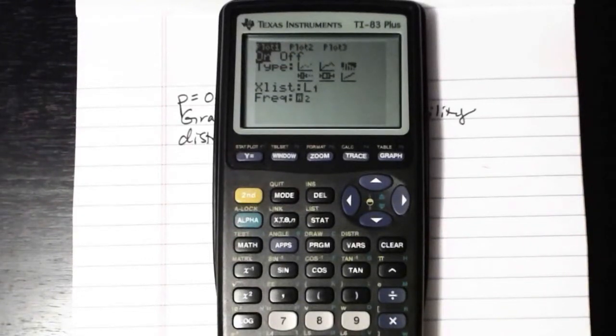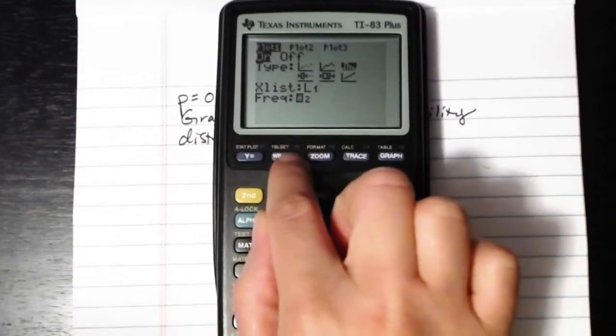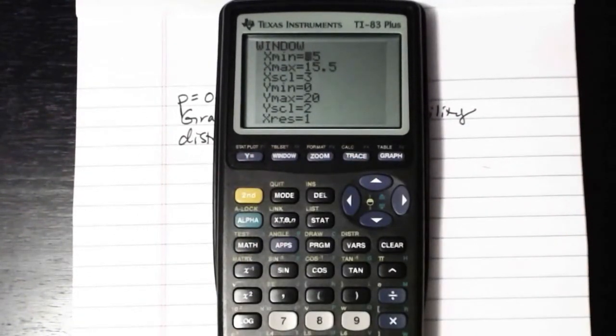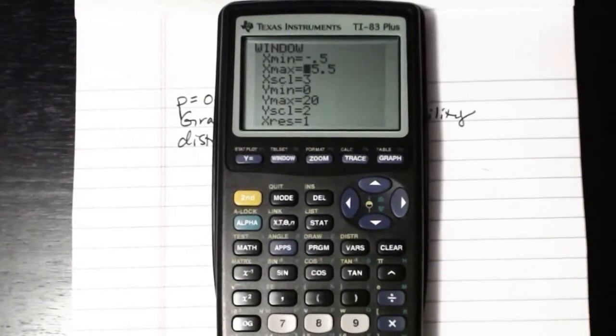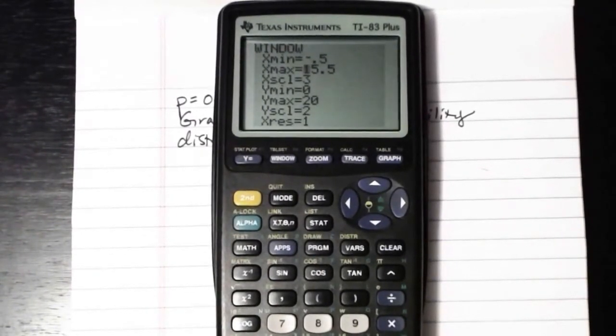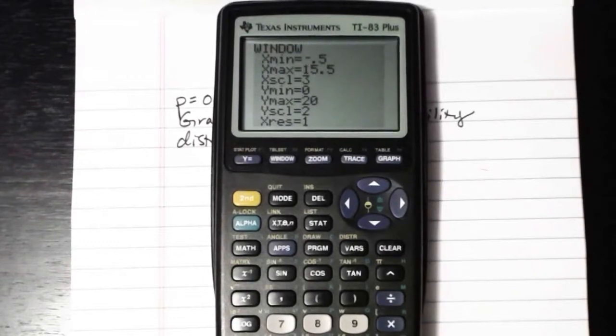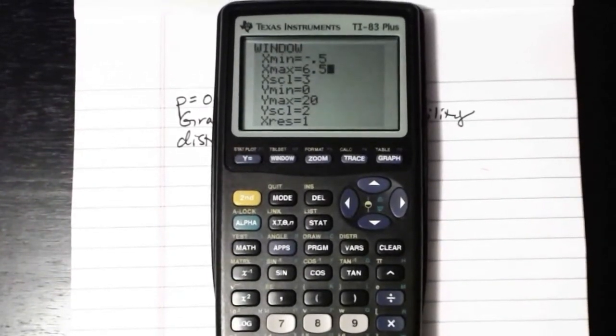Now at this point we're actually ready to go with the exception of the fact that we need to tell the calculator how to set up the window, what values do we actually want it to use for the window. So we'll press the window button, and we need to adjust this manually. I've given instructions for doing this in the calculator packet. The xmin should be set to negative 0.5, xmax should be set to whatever your n is, plus 0.5. So in this case our n, our total number of trials was 6, so we need to go up to 6.5. X scale should be set to 1.